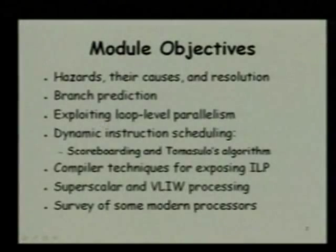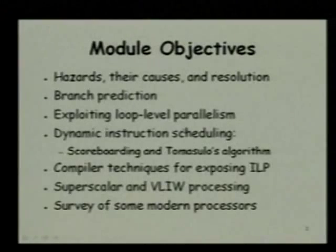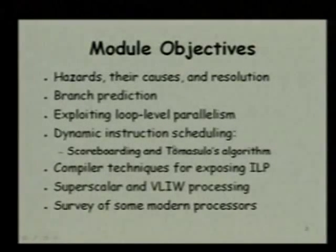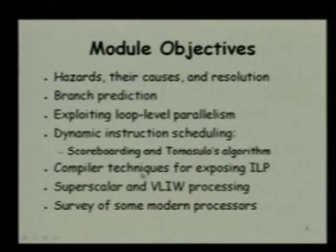So, in this series of next few lectures, we will first look at hazards, their causes and how they can be resolved. We will look at branch prediction and then we will look at loop level parallelism — what is loop level parallelism, how it can be exploited — and then we will look at a very important technique: dynamic instruction scheduling, which is a hardware technique to resolve hazards. Under dynamic instruction scheduling, we look at the original scoreboarding approach and its improvisation, the Tomasulo's algorithm. We will look at compiler techniques for exposing instruction level parallelism, look at superscalar and VLIW processing, and then survey some of the modern processors available nowadays.